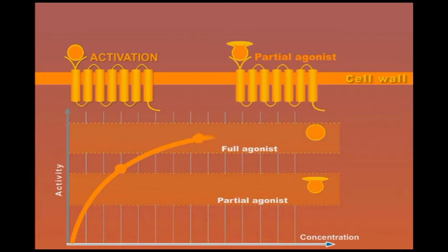As we can see in the graph, the biological effect of a partial agonist is always lower than that of a full agonist.